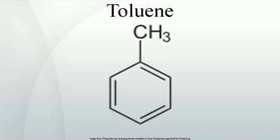Toluene is a clear, water-insoluble liquid with the typical smell of paint thinners. It is a mono-substituted benzene derivative — one in which a single hydrogen atom from a group of six atoms from the benzene molecule has been replaced by a univalent group, in this case CH3.